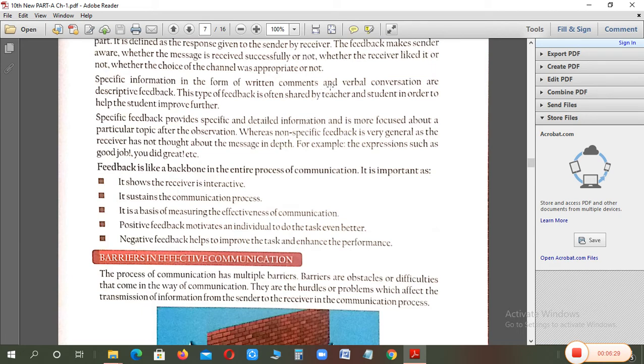Specific information in the form of written comment, and verbal conversation are descriptive feedback. Specific feedback bhi hoti hai, descriptive bhi hoti hai. This type of feedback is often shared by the teacher, and the student in order to help the student, to improve the further. Hum dekho, jo information, jaise aapne test diya, agar hum koi comment, to usmein saath mein likh ke dete hain, improve yourself, neat and clean writing karo, is subject mein ye jo aap, yeh saari kya hain, feedbacks hain, aapki study ko, aapki improve karein. Specific feedback, detail mein bhi ho sakti hai, and is more focused about a particular topic, observation, bhi humne us cheez se kya observe kiya.